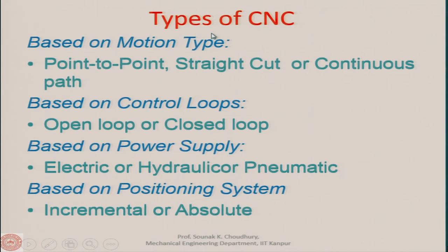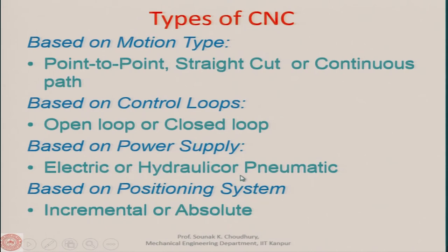Looking at the types of CNC control: based on motion type, we have point-to-point control, straight cut control, or continuous path (contouring) control. Based on control loops, we have open loop or closed loop systems. Based on power supply, we have electric, hydraulic, or pneumatic. Based on positioning system, we have incremental or absolute. We will discuss each of these now.